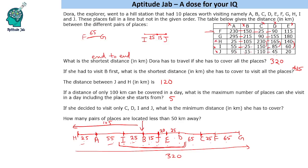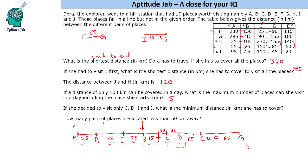If she decided to visit only C, D, I, and J, what is the minimum distance she has to cover? C is here, D is here, I is here, and J is here. The minimum distance she needs is from the farthest point to the closest, covering all. That is 40 plus 45 is 85, plus 65 is 150.